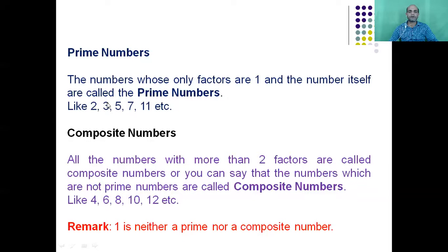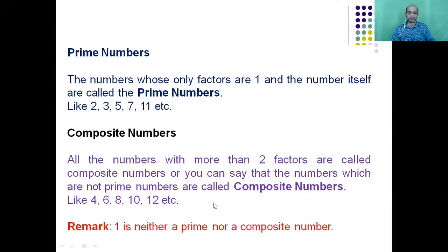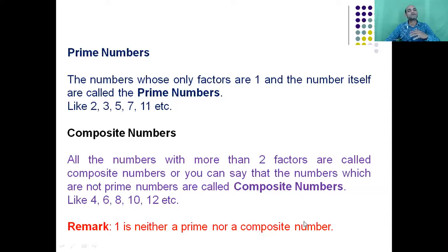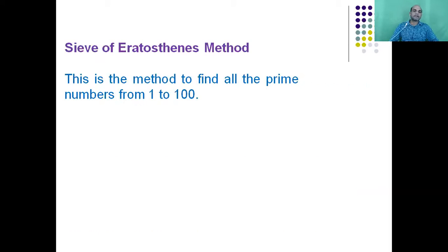Prime numbers are numbers whose only factors are 1 and the number itself — for example 2, 3, 5, 7, 11, and so on. Numbers having more than two factors are called composite numbers — for example 4, 6, 8, 10, 12, and so on. Now the case of 1 is special. You might wonder: is 1 a prime number or a composite number? Remember this — 1 is neither a prime nor a composite number. It has a special status.